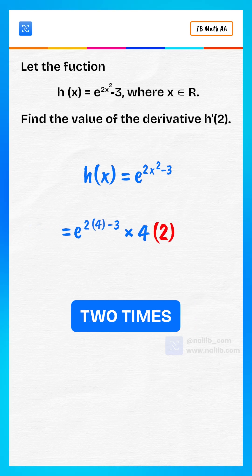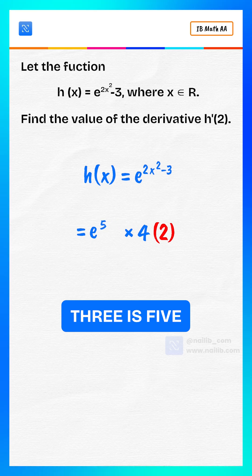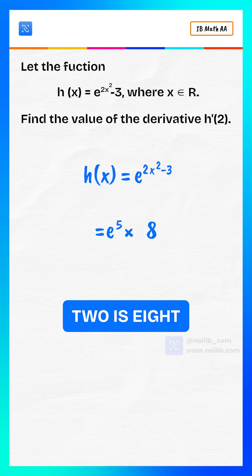2 squared is 4. 2 times 4 is 8. 8 minus 3 is 5. 4 times 2 is 8.